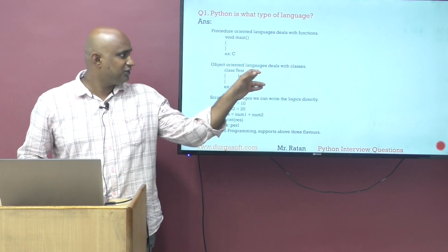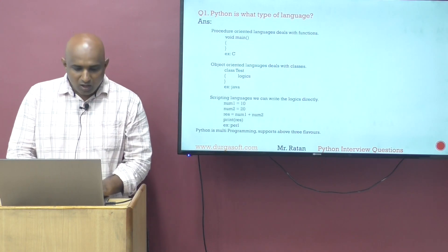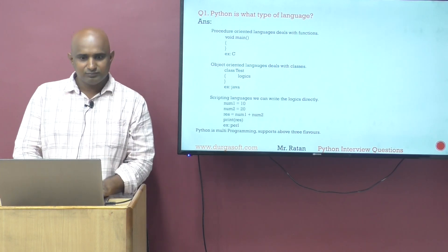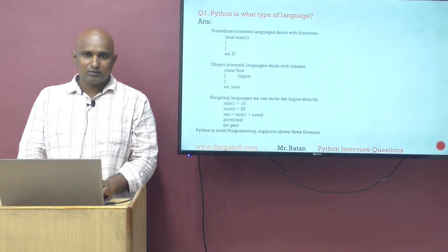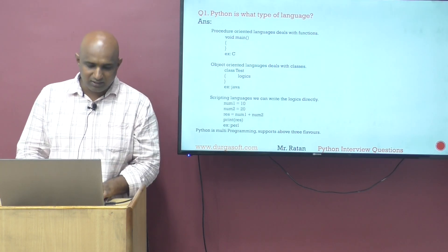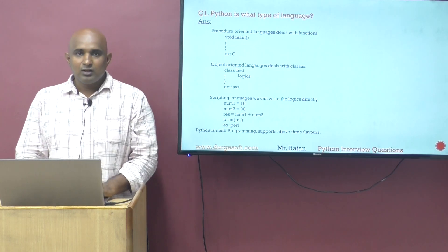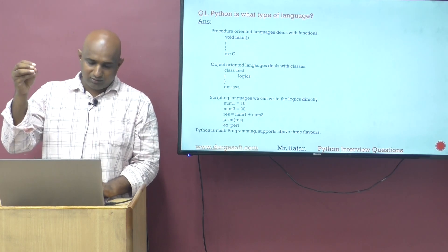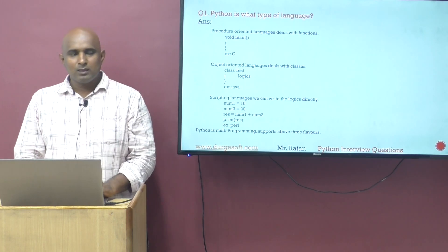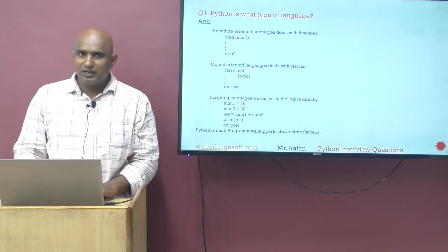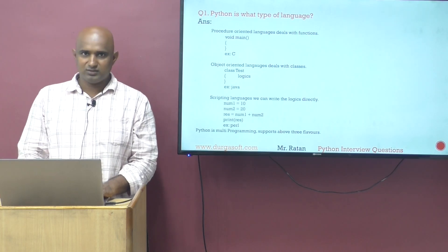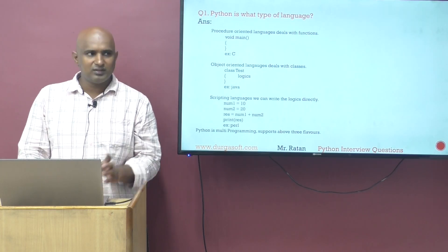What about Java? Java is an object-oriented programming language. Object-oriented programming languages deal with classes — everything we write inside the class. Example is Java. In Java, you can write the code only using classes; you can't write functions directly outside a class. Java is everything class-based.